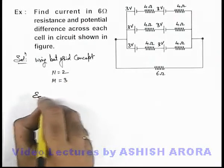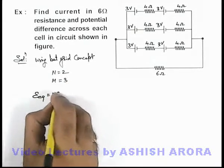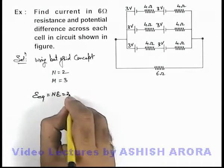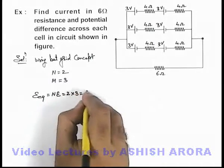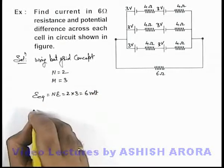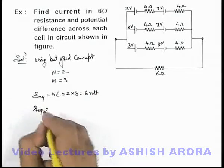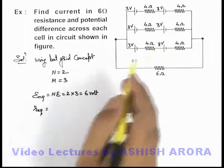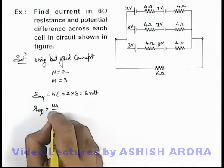Now in this situation we know that equivalent EMF in battery grid is N times E, so it'll be equal to 2 times individual batteries of 3 volt, so that will be 6 volt. And equivalent internal resistance for the battery grid we write as N*R by M.